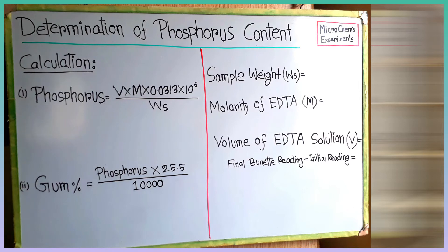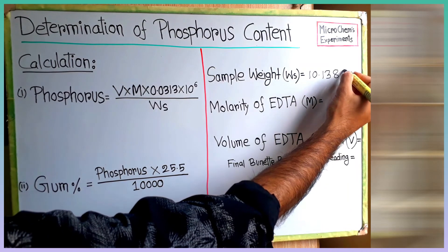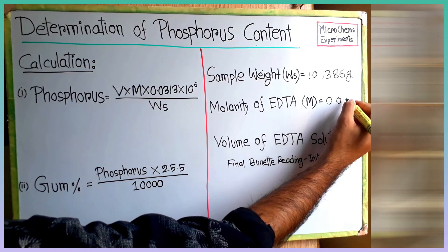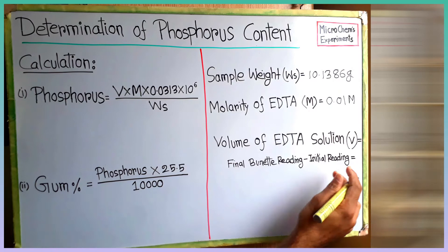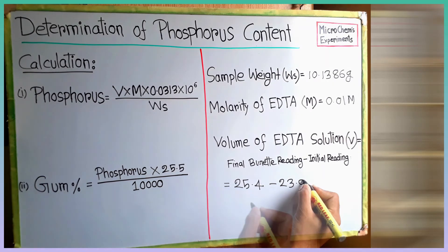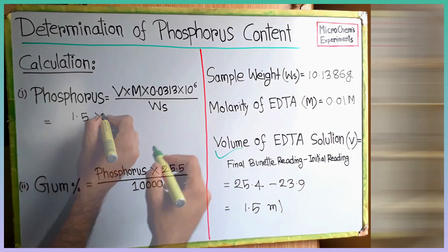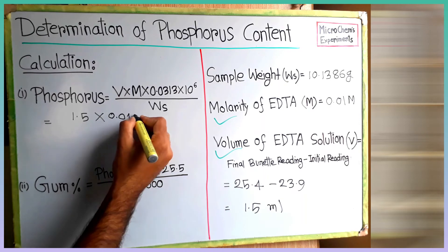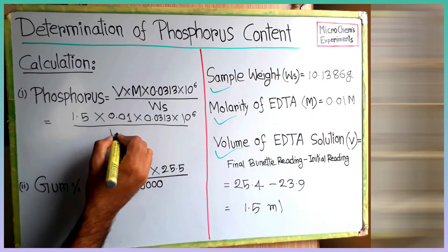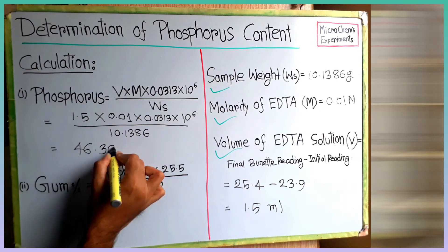First we will put the values on the right side of the board. We can find the volume of 0.01 molar EDTA solution by subtracting the final buret reading from the initial reading, which is 1.5 ml. Let's put all of the values in equation 1. By solving the equation we get the phosphorus content of the oil sample is 46.308 ppm.